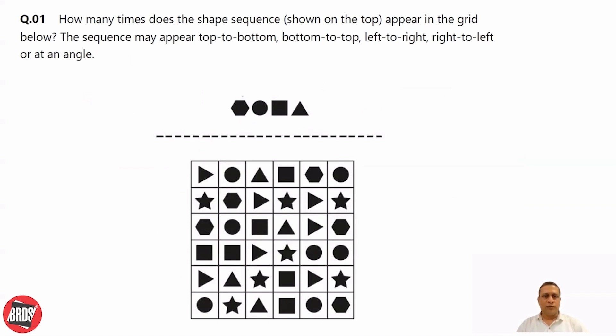What we do, we first search for hexagon and from there we will look for the pattern. So hexagon we have here, then we need circle, square, triangle.